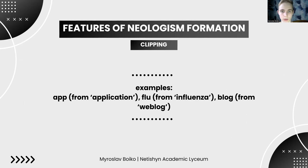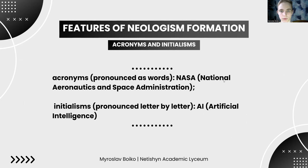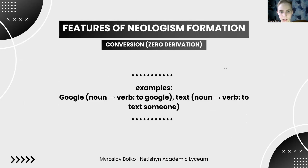Clipping is the shortening of longer words while maintaining their original meanings — app from application, flu from influenza, and blog from web blog. Acronyms and initialisms are formed from the initial letters of a phrase — NASA meaning National Aeronautics and Space Administration, or AI meaning artificial intelligence. Conversion involves changing a word's part of speech without altering its form — for example, google becoming the verb to google, or text becoming the verb to text someone.